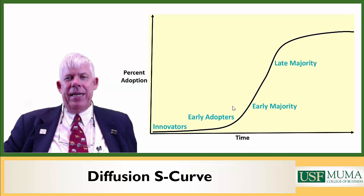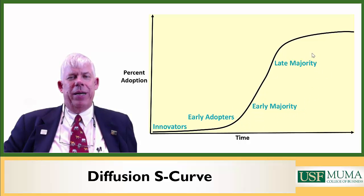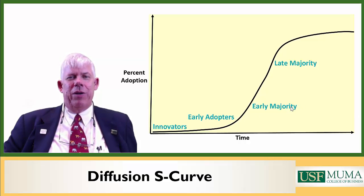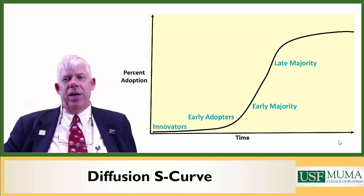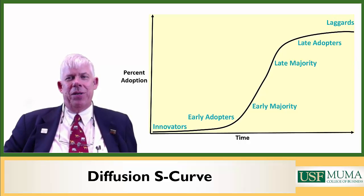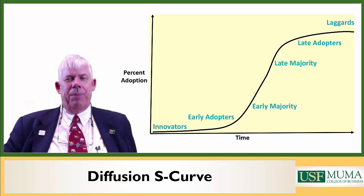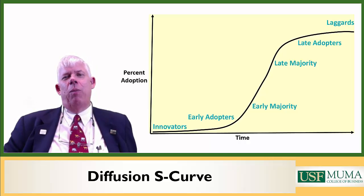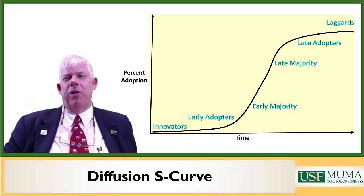Once innovators have demonstrated something, we encounter the early adopters. They will not adopt something without some evidence of it working, but they don't require a huge amount of evidence or social pressure. Then you have the early majority and the late majority — during the period where adoption is increasing very rapidly. These individuals tend to be heavily swayed by social aspects: they don't want to be the only ones who don't know or use something. Then come the late adopters, and finally the laggards, who may never adopt a particular innovation at all.